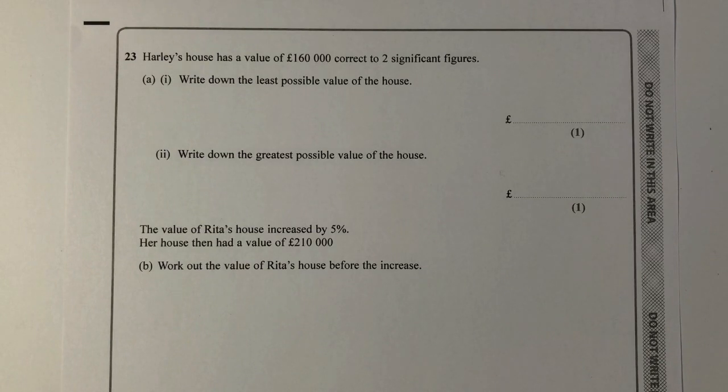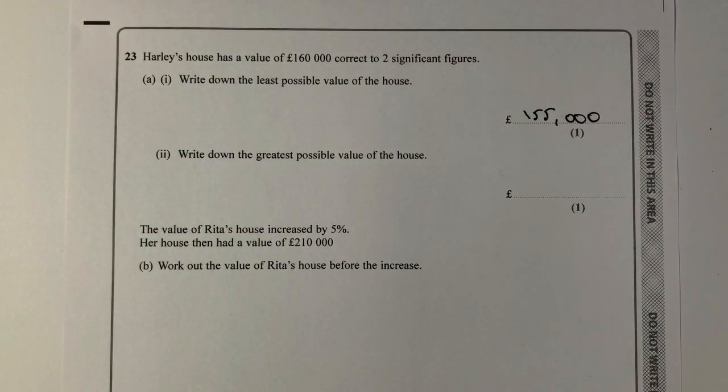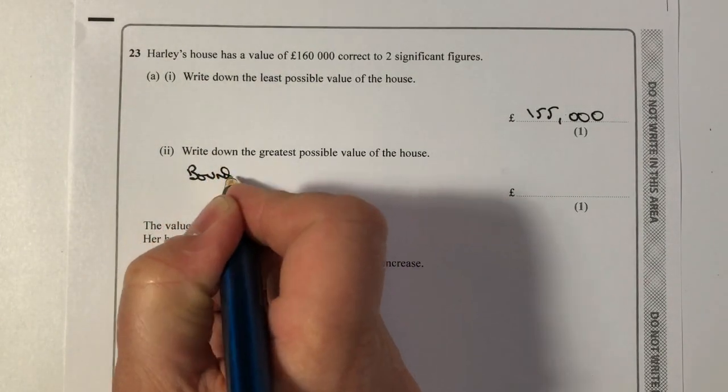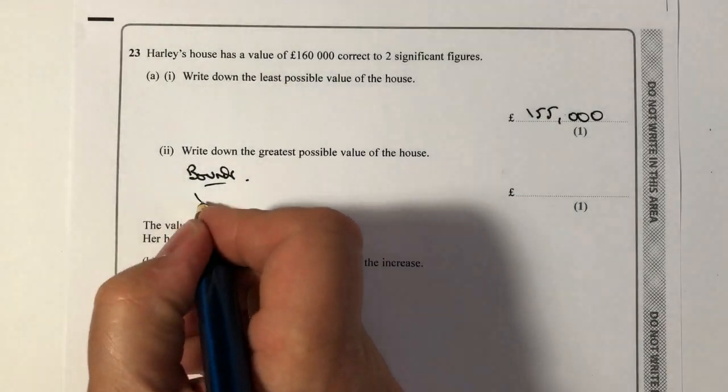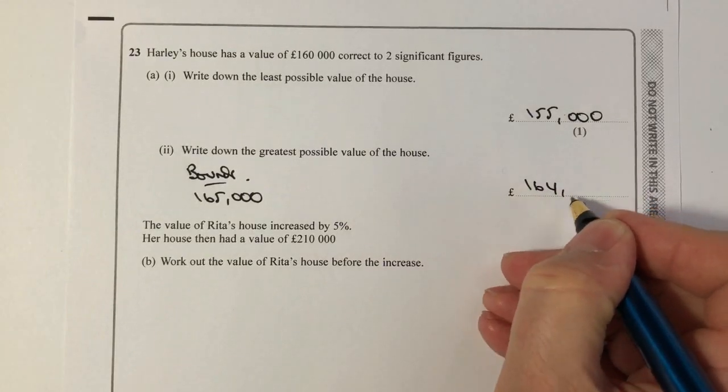Let's move on then to question number 23. Question 23 deals with the value of a house. It says, write down the least possible value of the house. This is correct to two significant figures. The least possible value of the house would be 155,000. And then it says, write down the greatest possible value of the house. I did look at this. One of the things I should have done is checked the marking scheme on this, because there is something in the higher levels that's called bounds. If it was a bounds question, then that would be 165,000. But it's not, it's a rounding question. So the greatest possible value of the house to two significant figures would be 164,999.